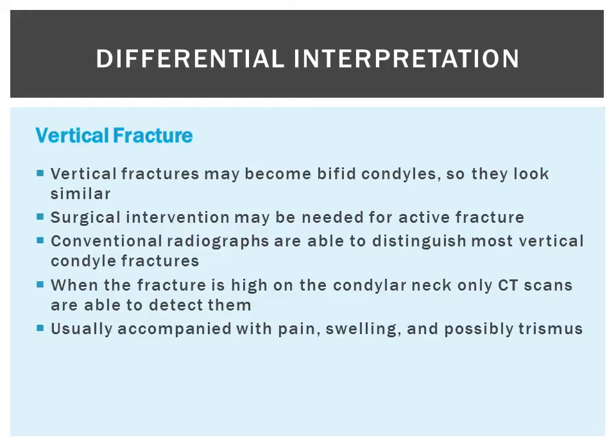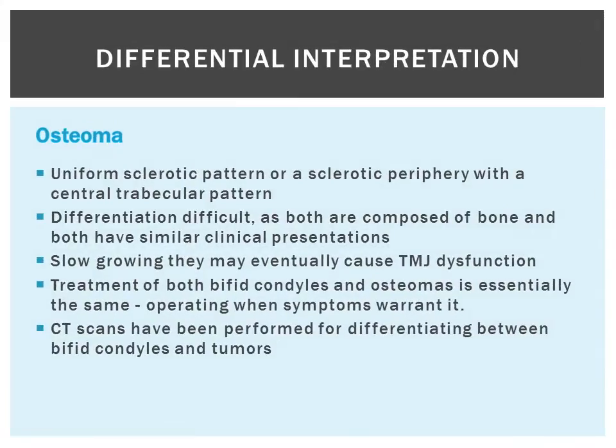Also, if there is an active fracture, it is usually accompanied with pain, swelling, and possibly trismus. To tell the difference between an osteoma and a bifed condyle can be extremely difficult as they look very similar. The osteoma has a uniform sclerotic pattern or a sclerotic periphery with a central trabecular pattern. The osteoma is very slow growing and may eventually cause TMJ dysfunction. Fortunately, the treatment of both bifed condyles and osteomas is the same — we do not do anything unless the patient is having really bad symptoms, at which point we try to intervene.